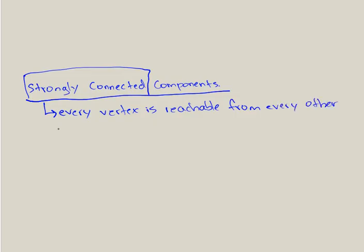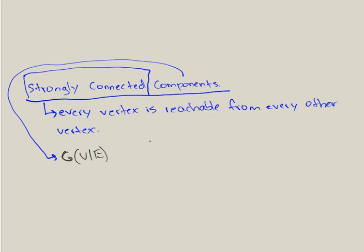What does strongly connected components mean? If you're given a graph G with vertices and edges, then a strongly connected component is just a subgraph within graph G that is strongly connected. Let me walk you through an example and things will be a lot more clear.